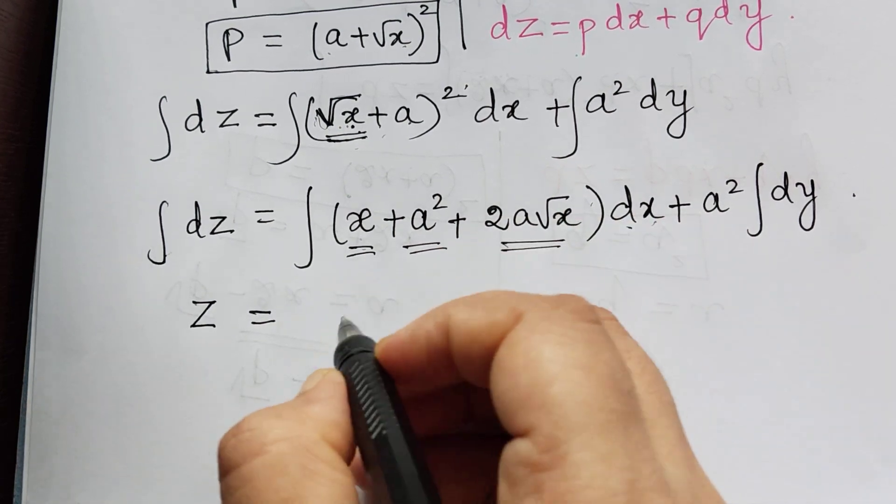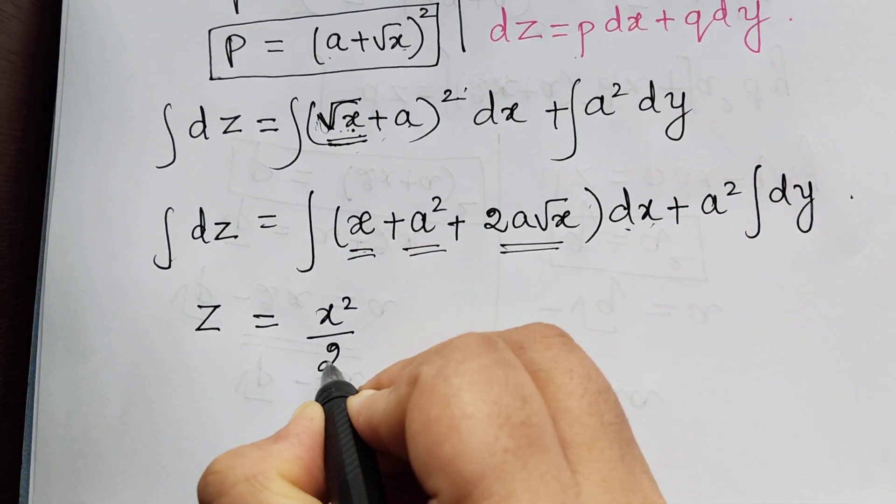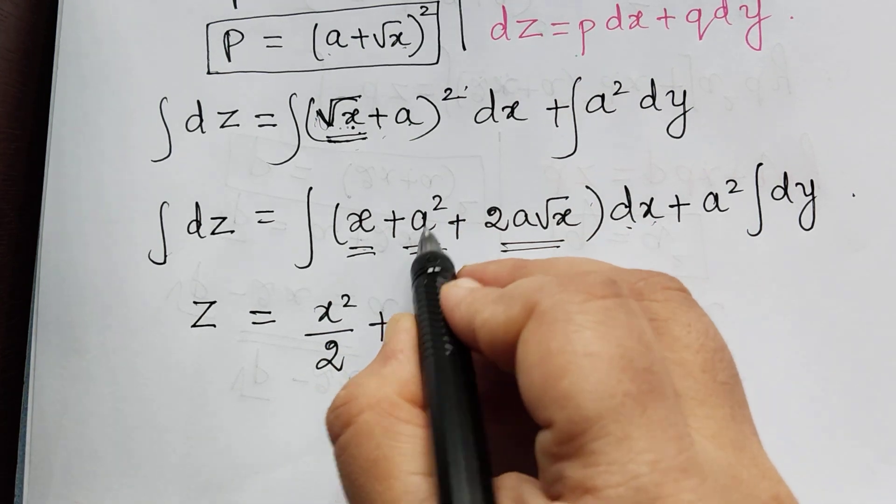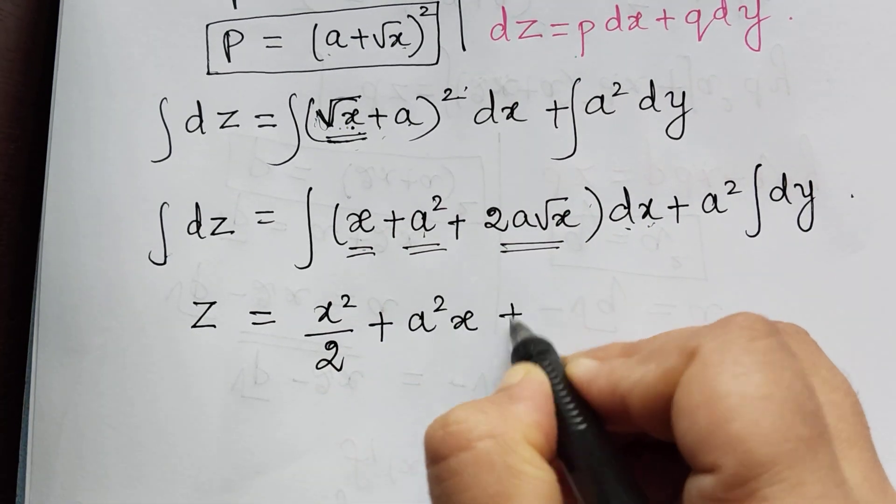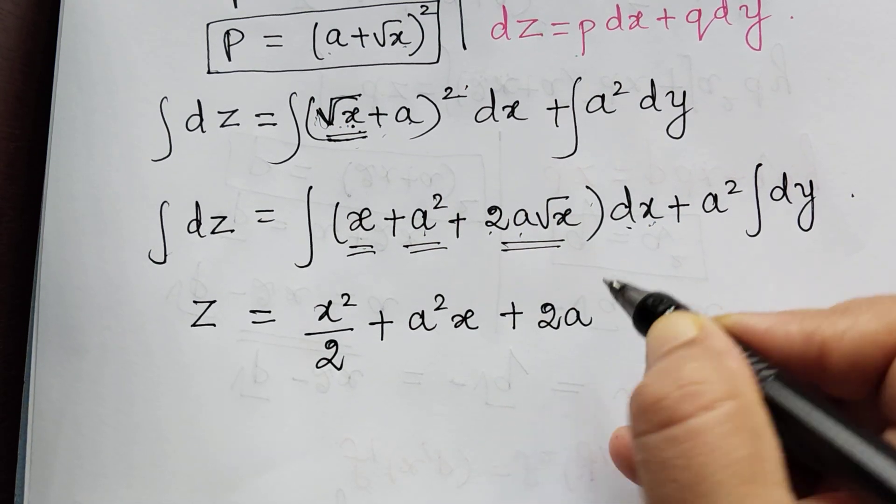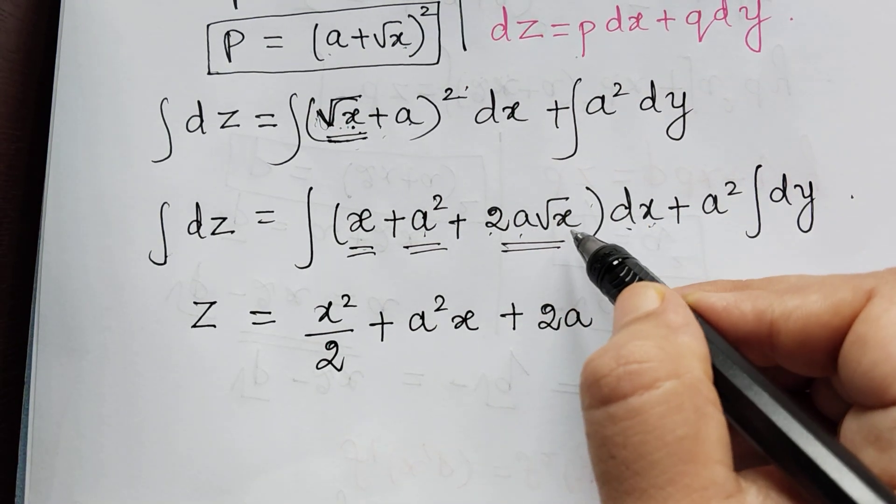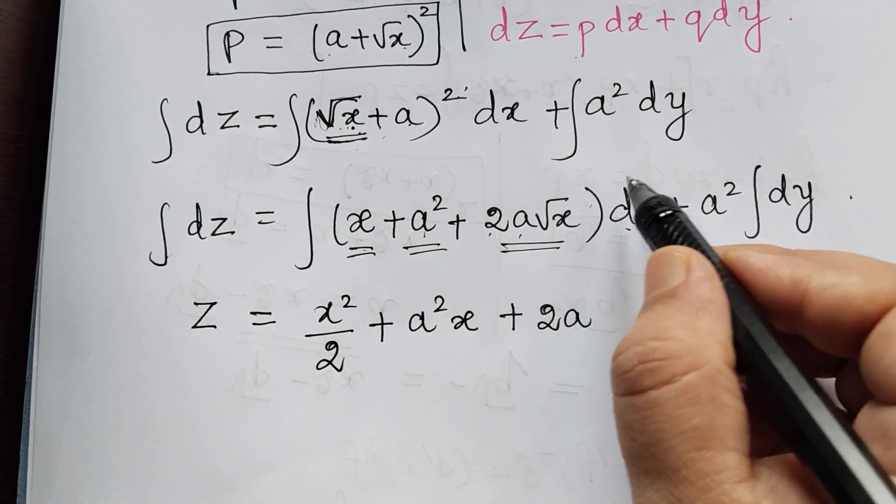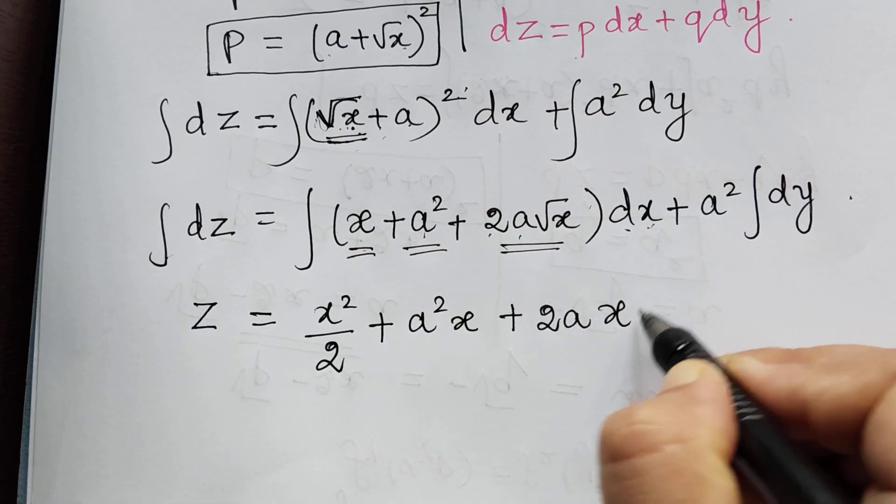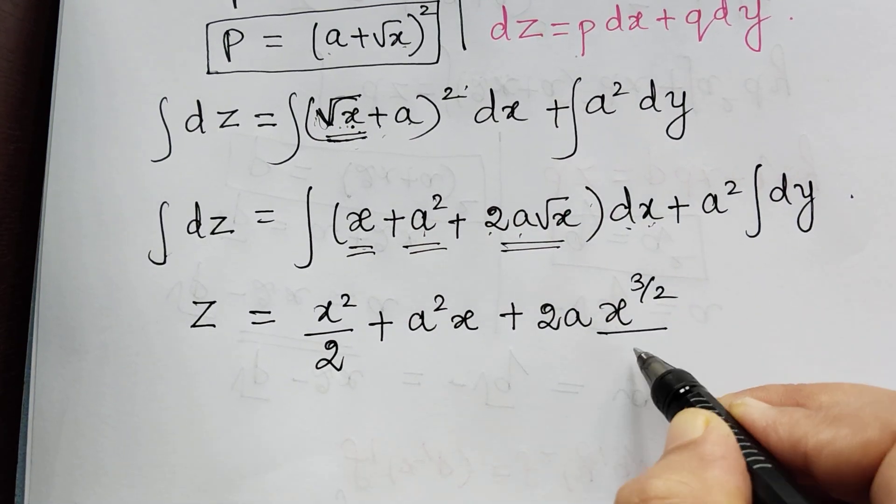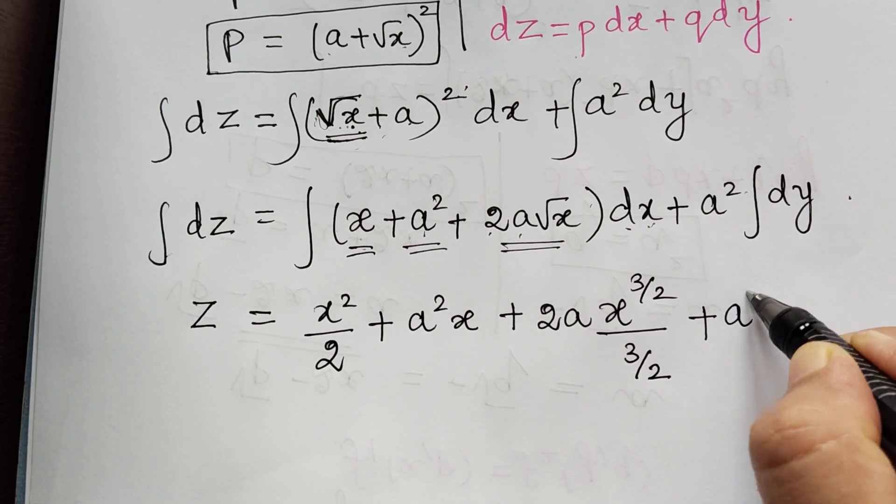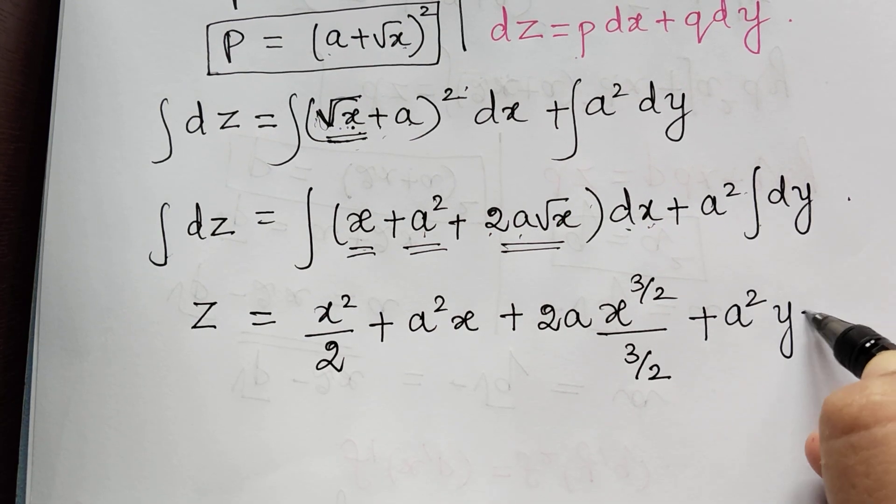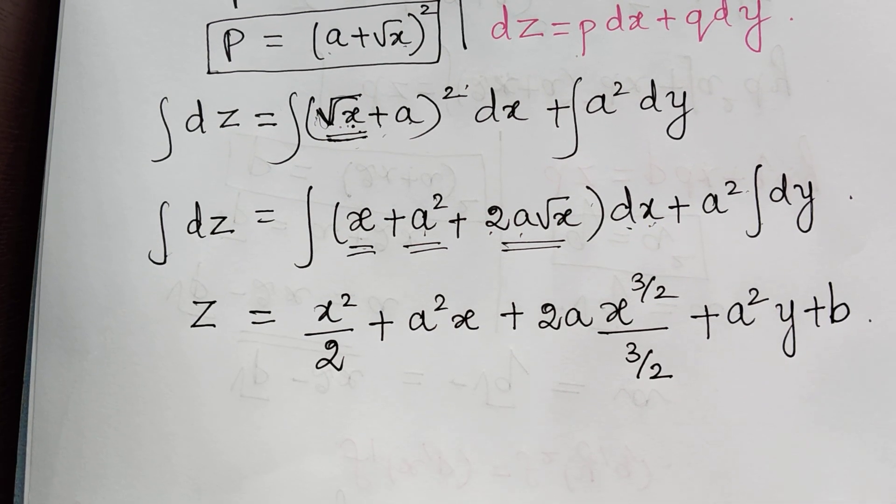integral dx dx will be x squared by 2 plus integral a squared dx will be a squared x plus 2a is a constant. And square root of x is nothing but x to the power 1 by 2. So on integration, it will be x to the power 3 by 2 divided by 3 by 2. Plus a squared integral dy is y plus a constant of integration b.